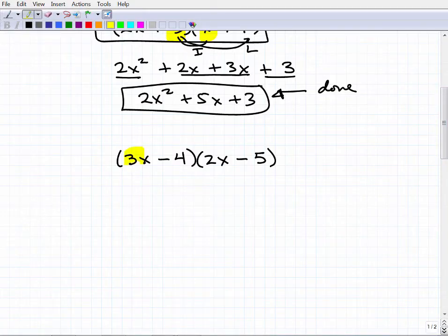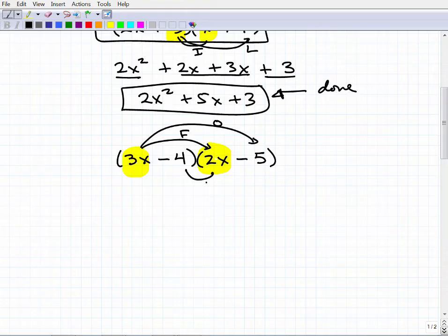So I'm going to do the first. So the first, let's just do it this way. So this is going to be first, outer, inner, and then the last. Now I'm concentrating on the first. So that's 3x times 2x. So that's 6x squared.